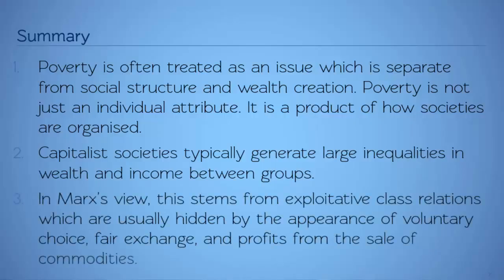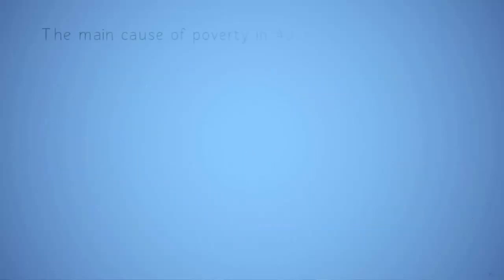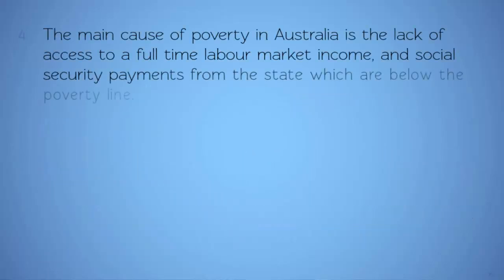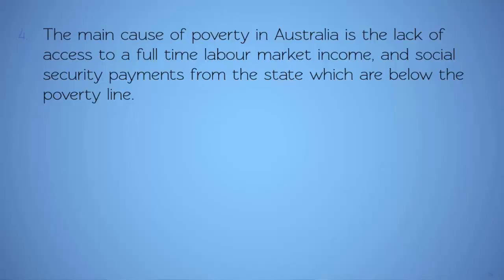Third, in Marx's view, this stems from exploitative class relations, which are usually hidden by the appearance of voluntary choice, fair exchange and profits from the sale of commodities. Fourth, the main cause of poverty is the lack of access to a full-time labour market income and social security payments from the state, which are below the poverty line.